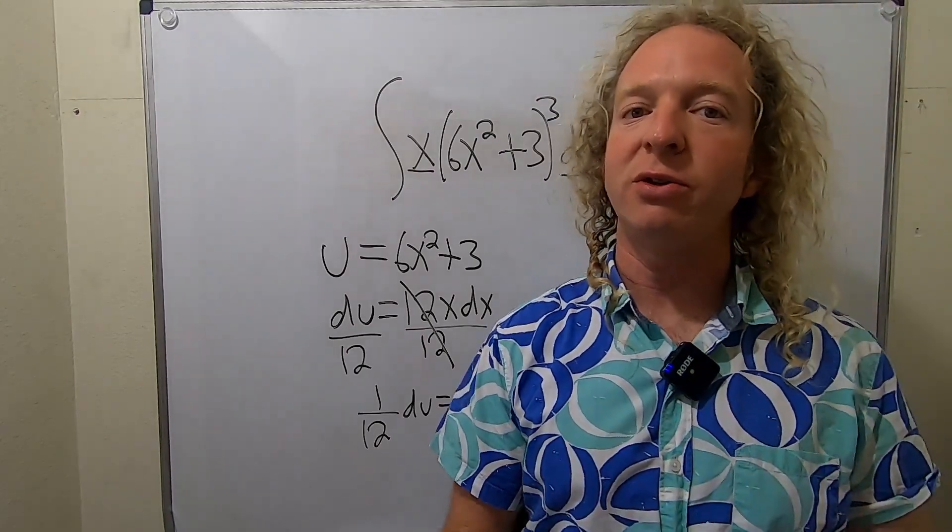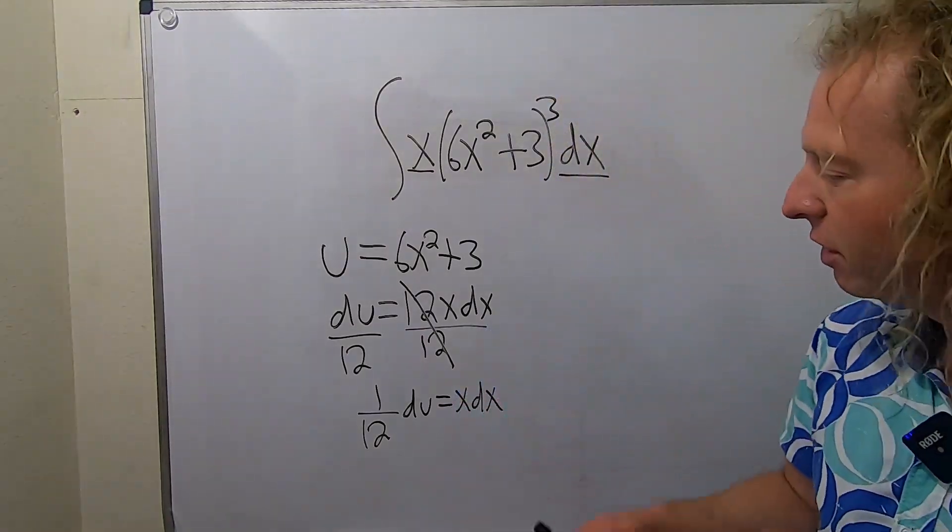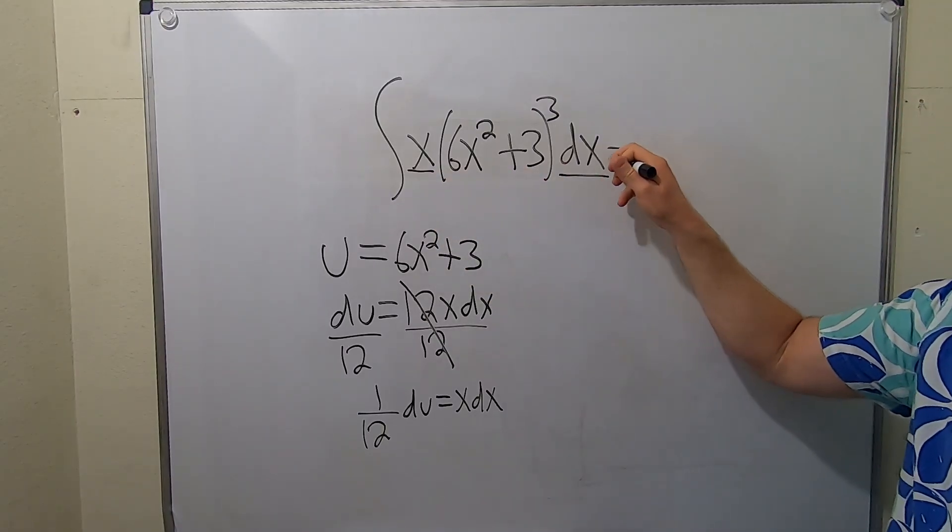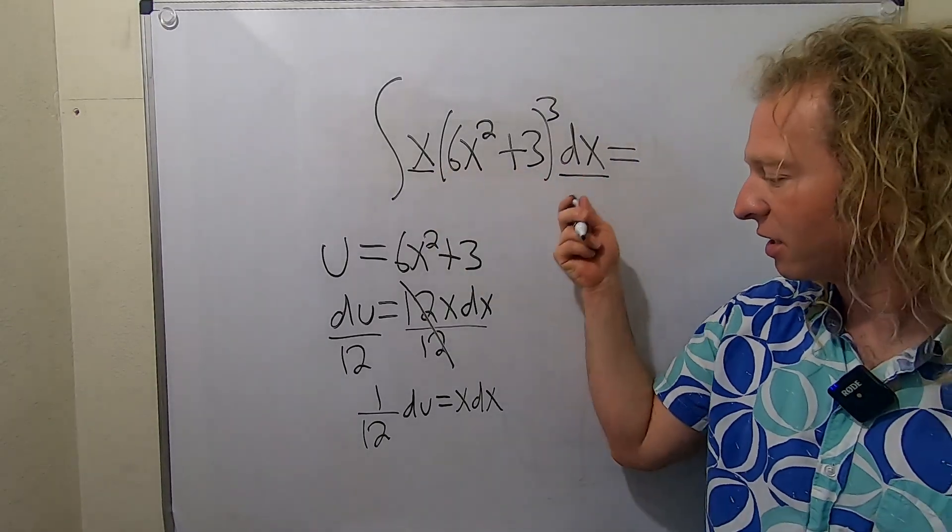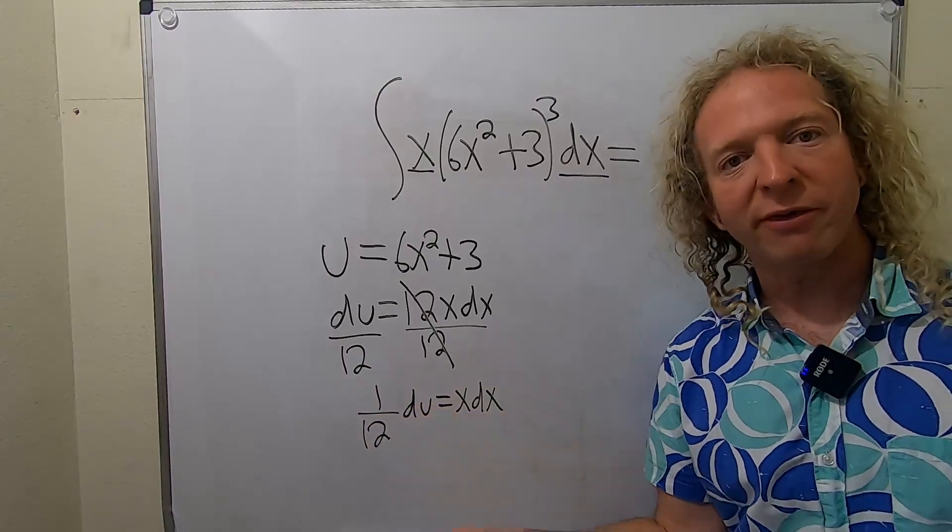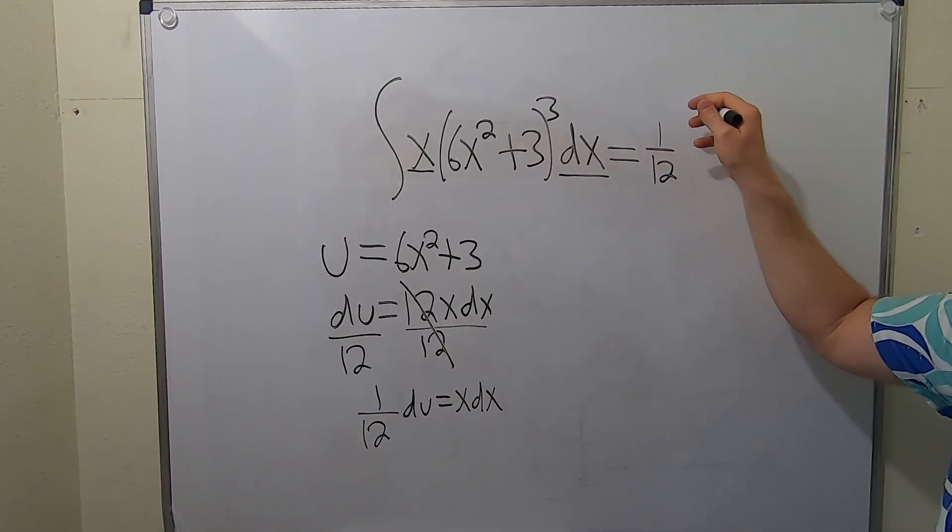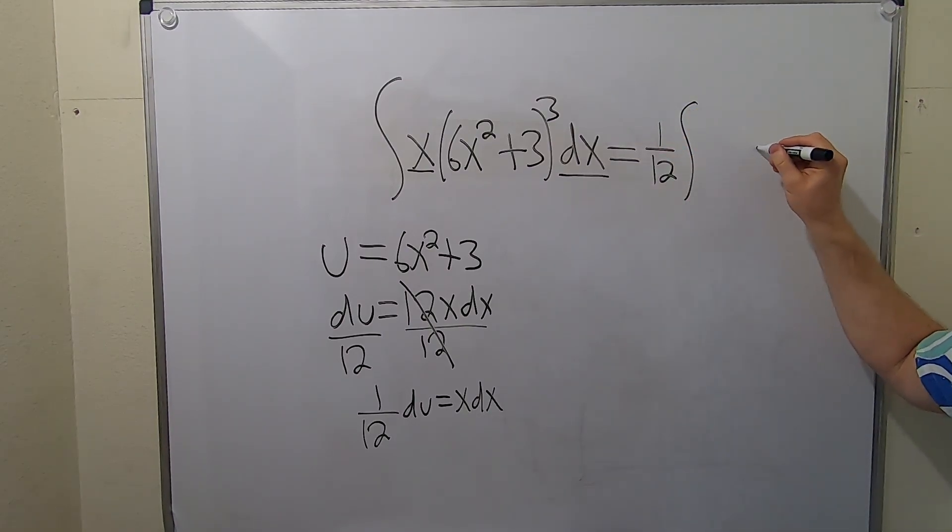All right, so now we're in a good place. Now we're ready to make our substitution. So x dx is right here, x dx. So this is equal to: the x dx is going to become 1/12 du. So I'm going to pull out the 1/12 from the integral—you can pull out numbers, remember—and then we have our du here.